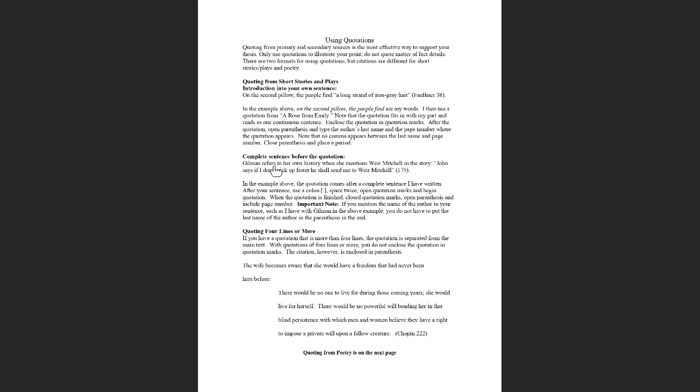The second way to use a quotation is to write a sentence that introduces it, then put a colon, then give the quotation. For example: 'Gilman refers to her own history when she mentions Weir Mitchell in the story' — that's a separate complete sentence — then colon, then the quotation. For parenthetical citations after the quotation, you open parentheses, give the author's last name, the page number, close parentheses, then the period. There is no punctuation between the author's last name and the page number, and the period goes after the parentheses.